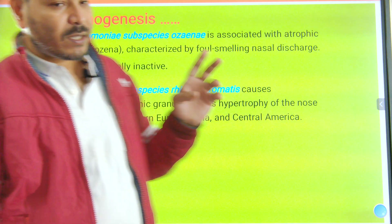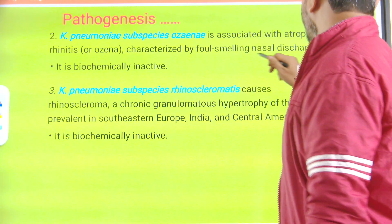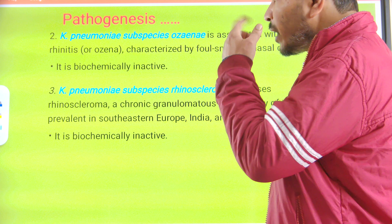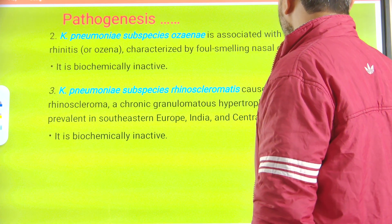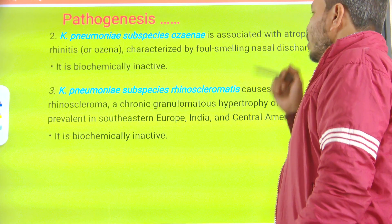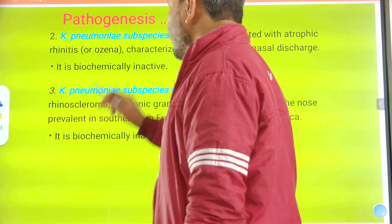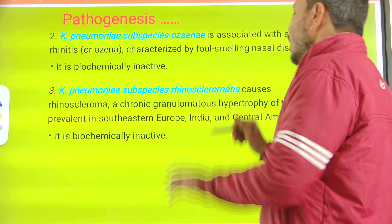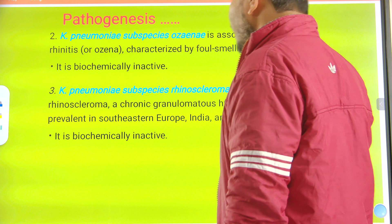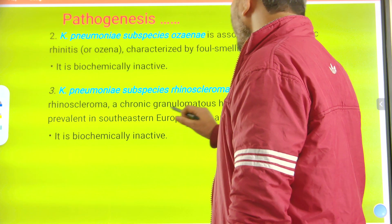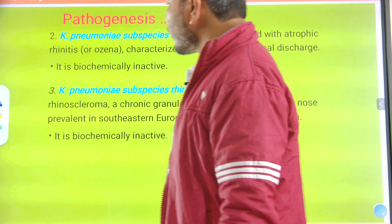The two additional subspecies of Klebsiella pneumoniae are: subspecies ozaenae, associated with atrophic rhinitis (ozaena), characterized by foul-smelling nasal discharge with bad odor — it is biochemically inactive; and subspecies rhinoscleromatis, which forms stone-like structures in the nose and causes rhinoscleroma, a chronic granulomatous hypertrophy of the nose prevalent in Southeastern Europe, India, and Central America — also biochemically inactive.